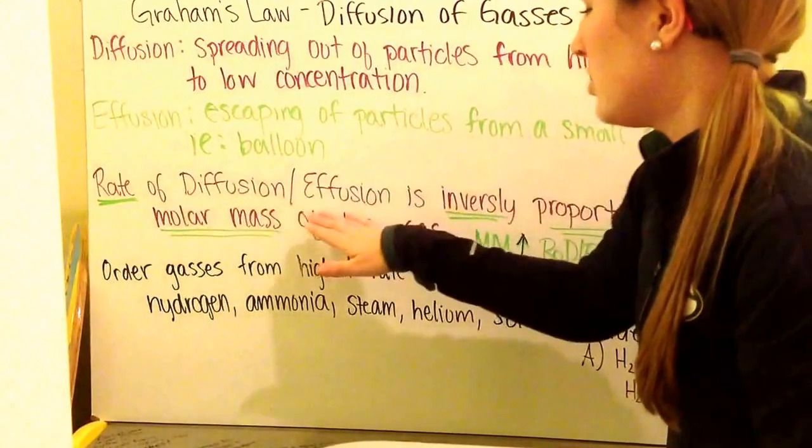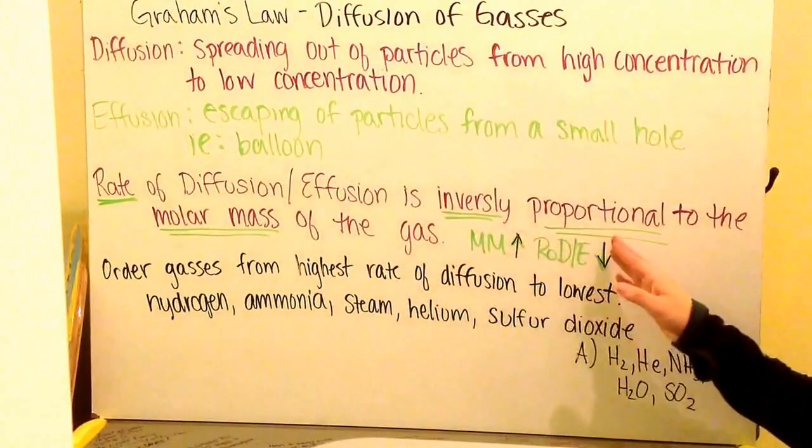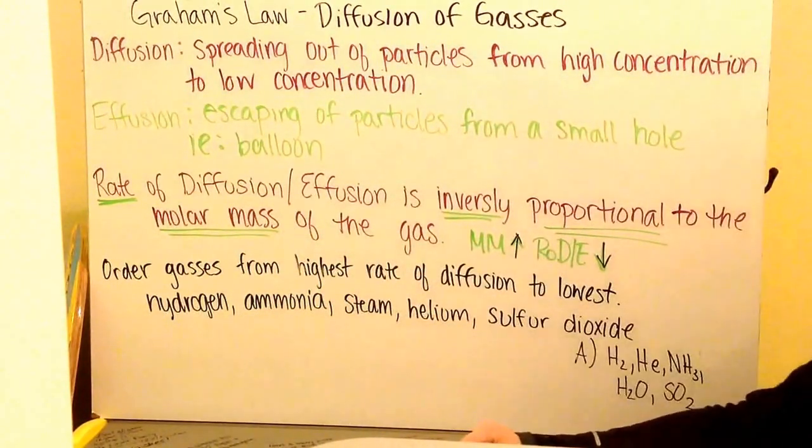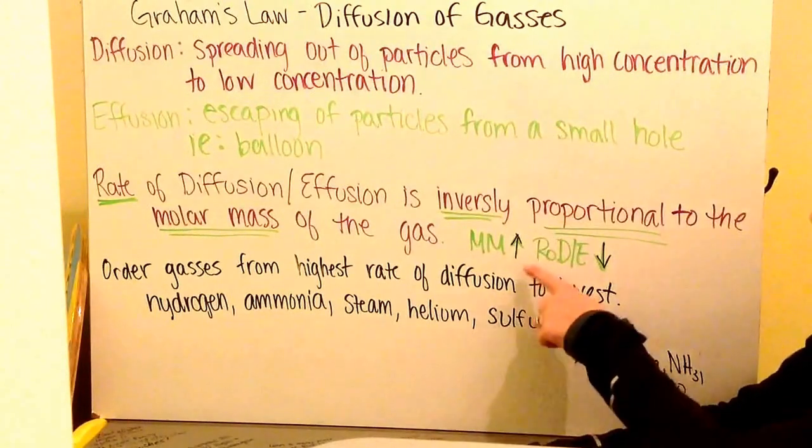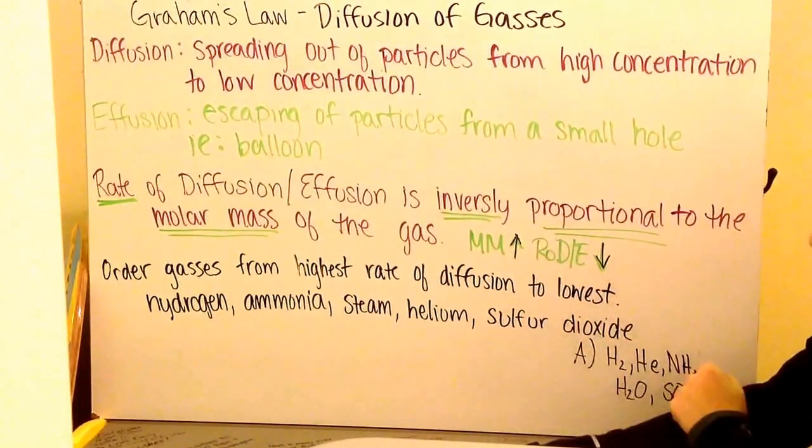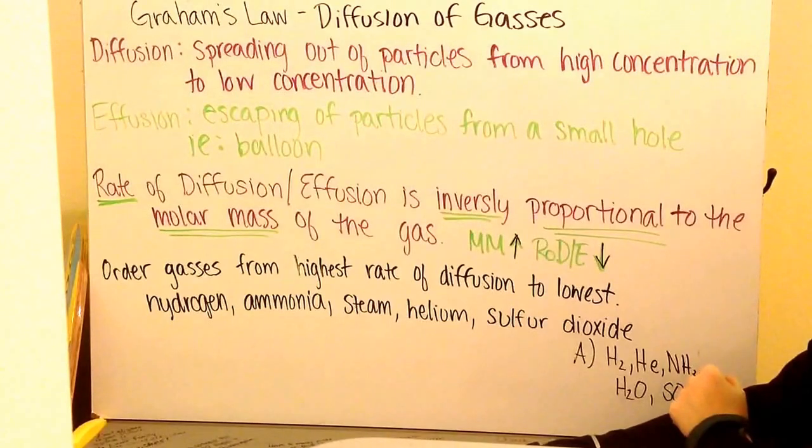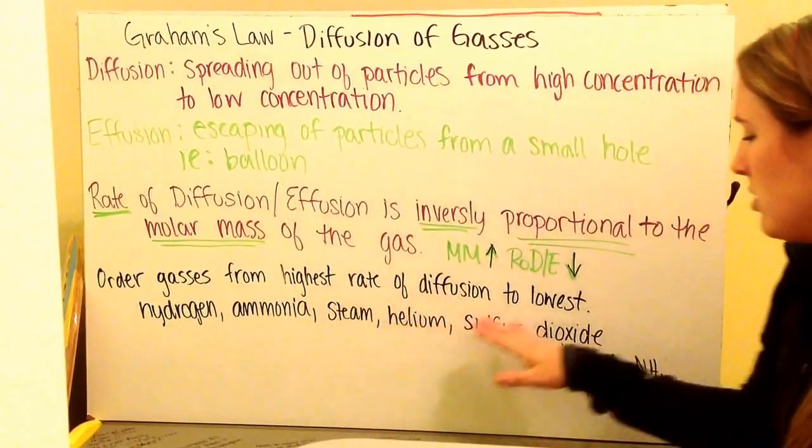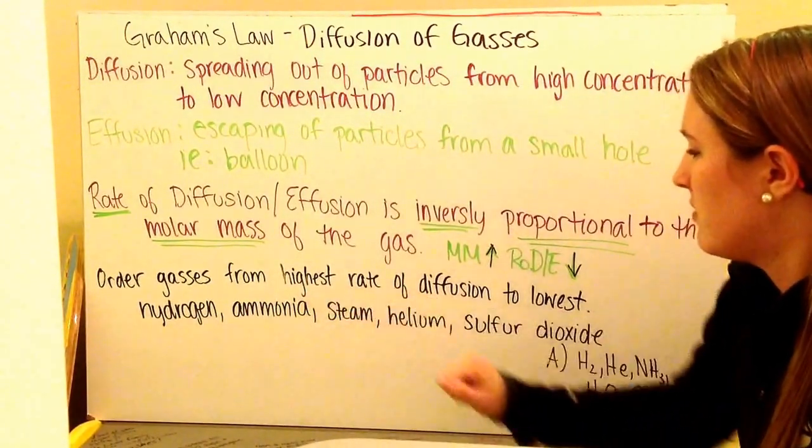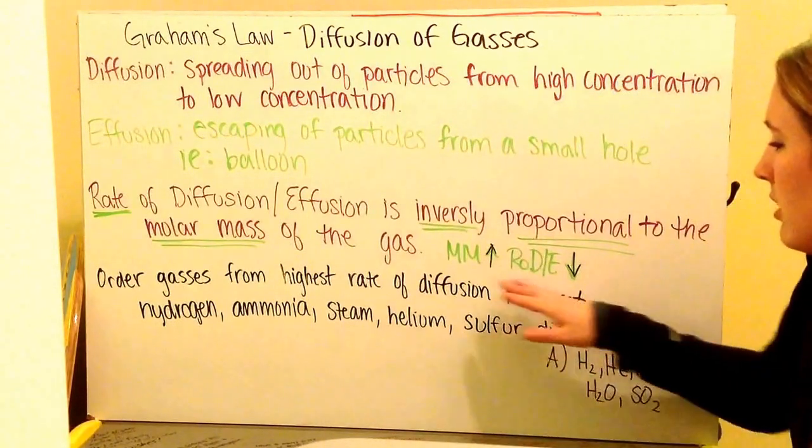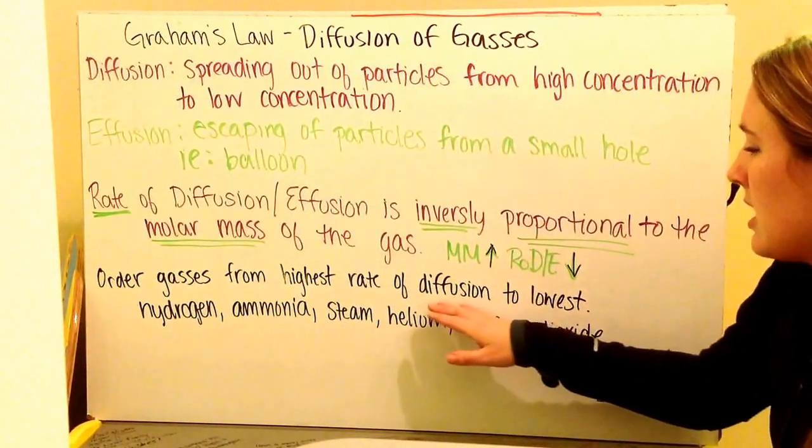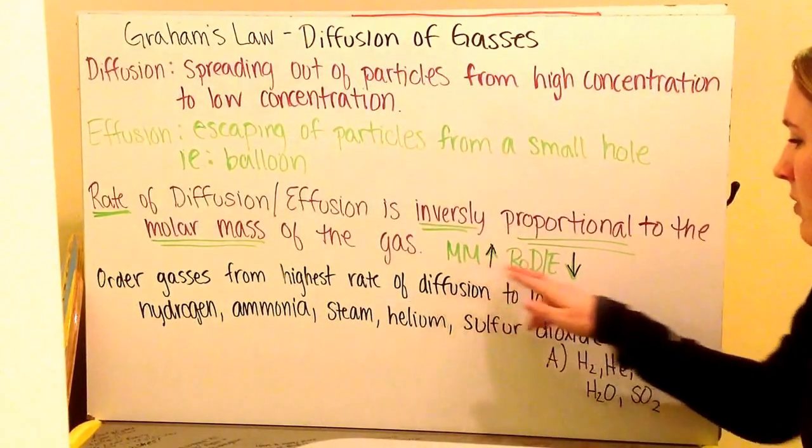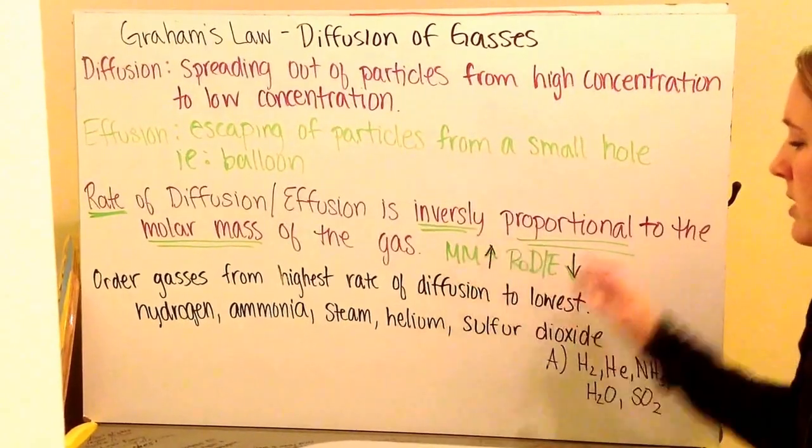Our rate of diffusion and effusion is going to be inversely proportional to the molar masses of the gas. What that means is as my molar mass increases, my rate of diffusion or effusion will decrease. So for example, we want to order our gases from highest rate of diffusion to lowest. Knowing that our highest rate of diffusion is going to have the lowest molar mass.